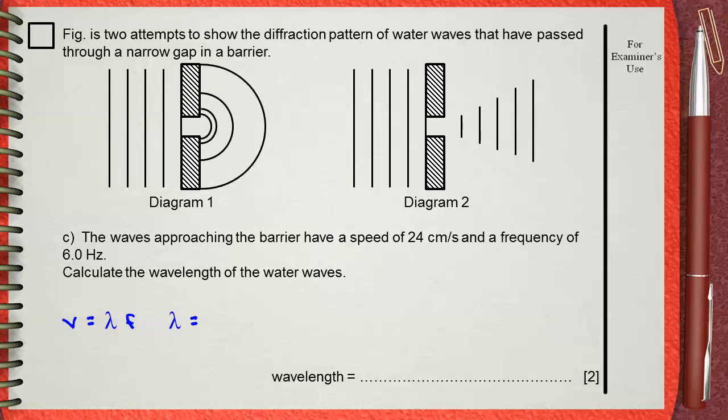Rearranging this equation, lambda equals V over F. V is 24 centimeters per second, and the frequency is 6 Hertz.